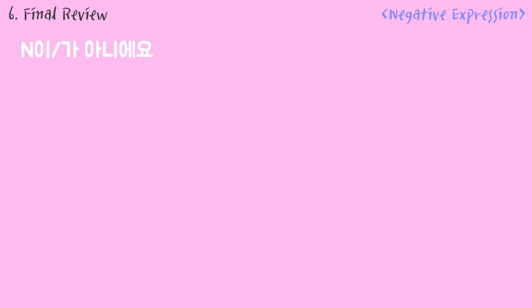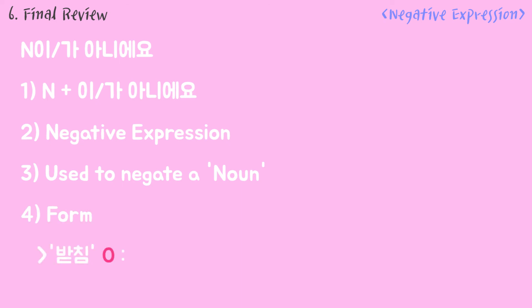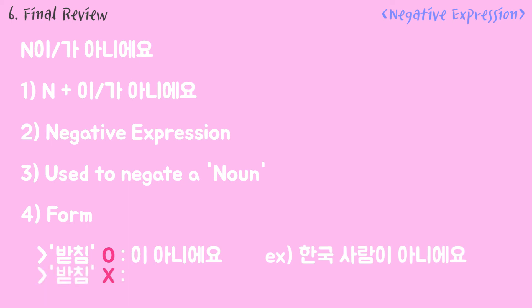Final review. Today we've learned 이, 가, 아니에요. A noun goes before 이, 가, 아니에요. This is a negative expression used to negate a noun. If there is a 받침, you can use 이 아니에요, for example 한국 사람이 아니에요. If there is no 받침, you can use 가 아니에요.